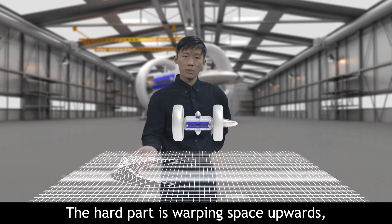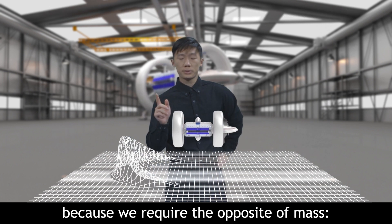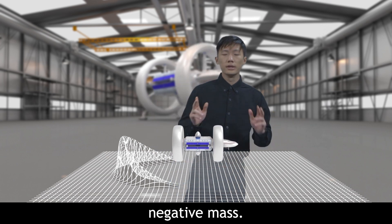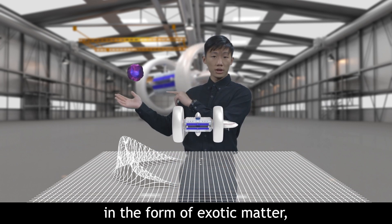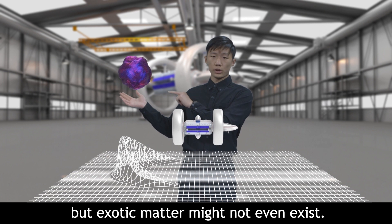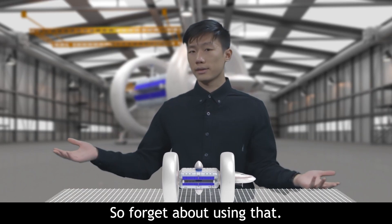The hard part is warping space upwards, because we require the opposite of mass: negative mass. Negative mass could exist in the form of exotic matter. But exotic matter might not even exist, so forget about using that.